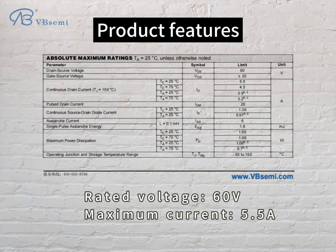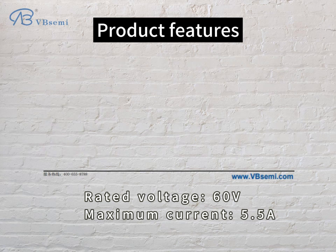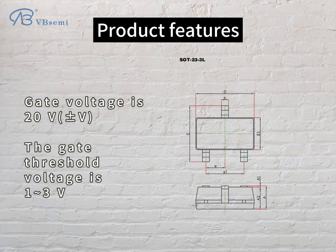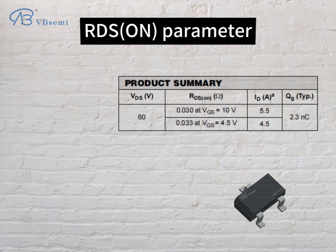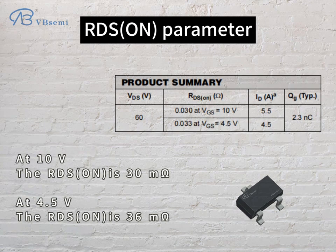Rated voltage 60V, maximum current 5.5A. Gate voltage is 20V, the gate threshold voltage is 1 to 3V. RDS on parameter: at 10V, the RDS on is 30 milliohms. At 4.5V, the RDS on is 36 milliohms.